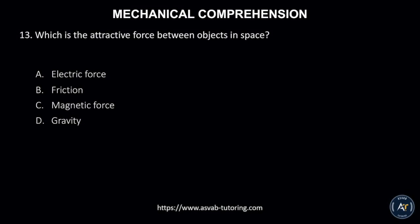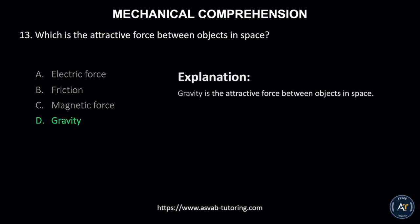Number 13. Which is the attractive force between objects in space? A. Electric force, B. Friction, C. Magnetic force, or D. Gravity? The correct answer is D. Gravity. Gravity is the attractive force between objects in space.